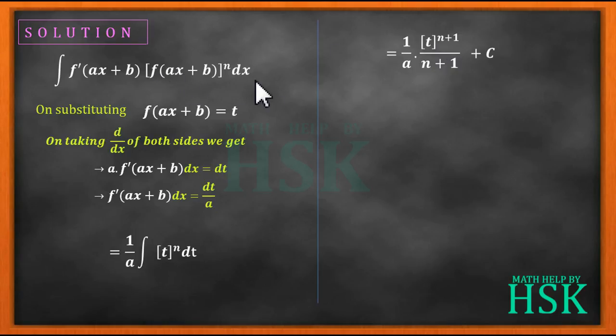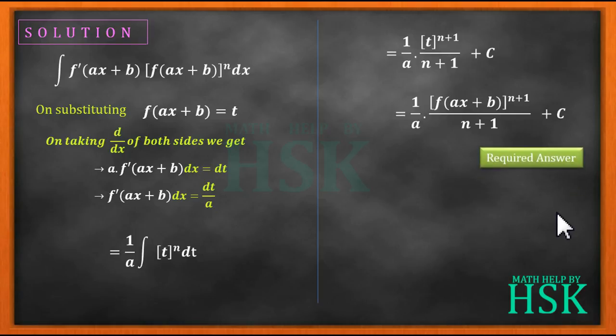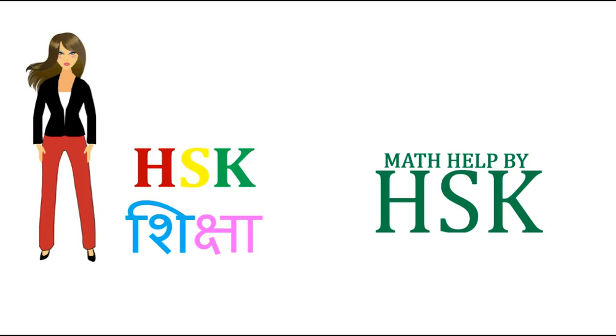On substituting t = f(ax+b), I'm going to get the final answer: the integration of this function is equal to (1/a) times [f(ax+b)]^(n+1)/(n+1) + c. This will be the required answer, friends.